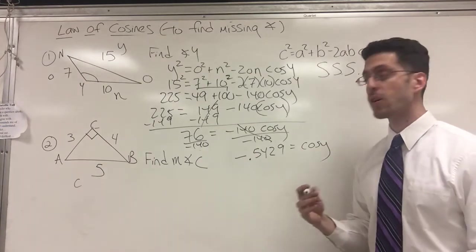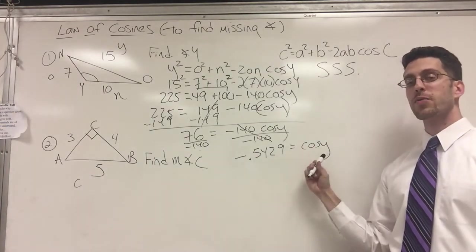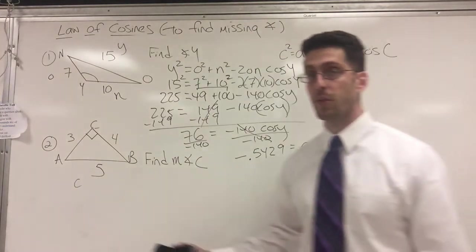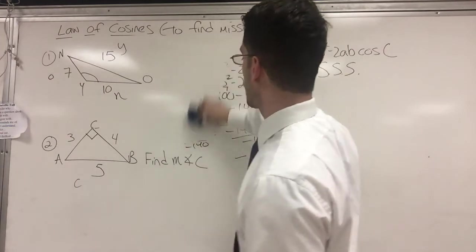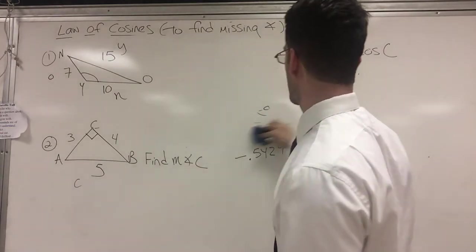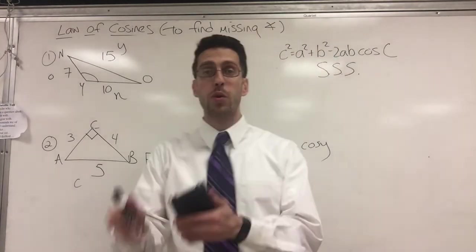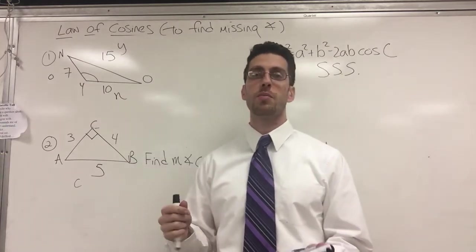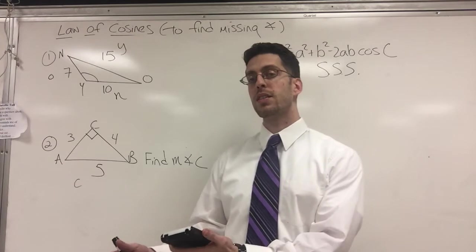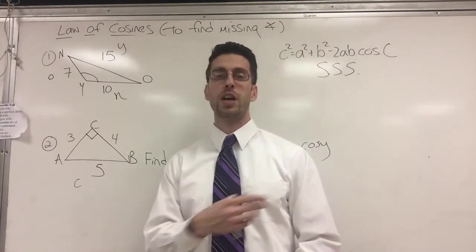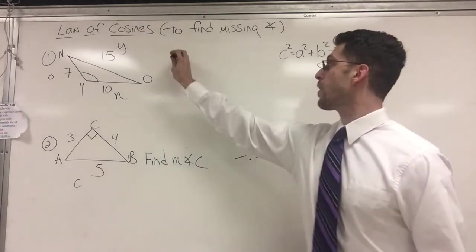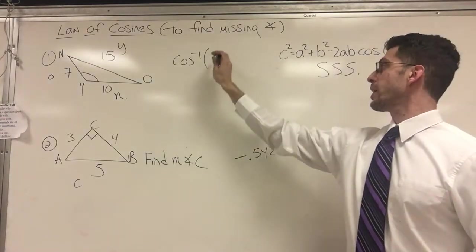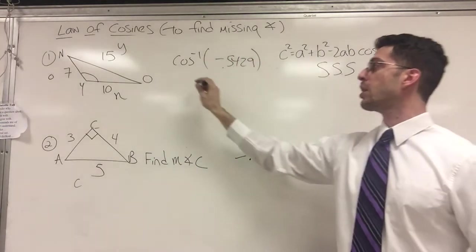So negative 0.5429 equals cosine Y. Did I get my variable alone? Still no. I know what the cosine equals. I need Y itself. What do you do? I'm going to erase everything now because we're pretty much done with that question. What do you do if you know the cosine, but you need the angle? You know the cosine, you need the angle. If you have a missing angle, you should have seen my intro to trigonometry video.